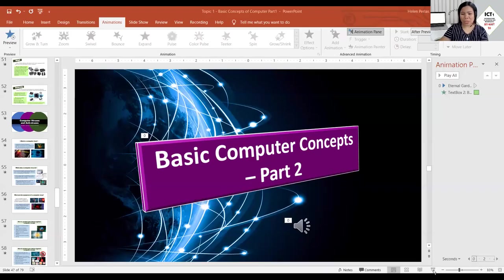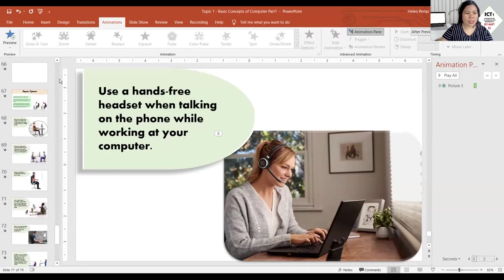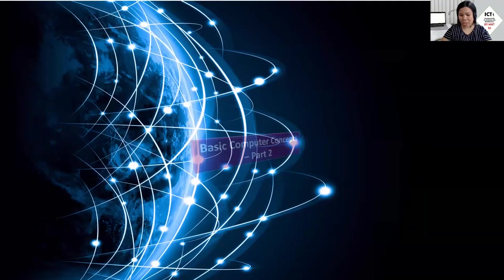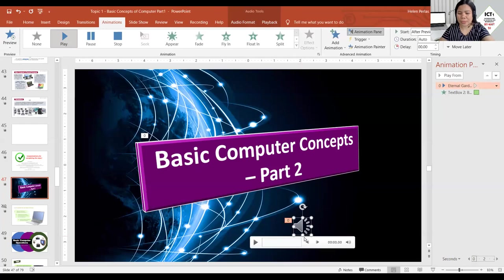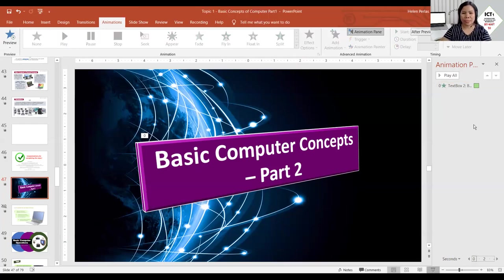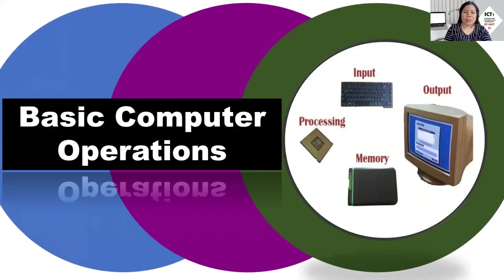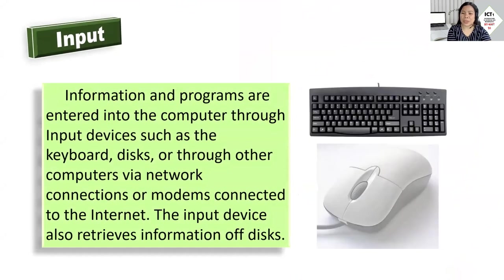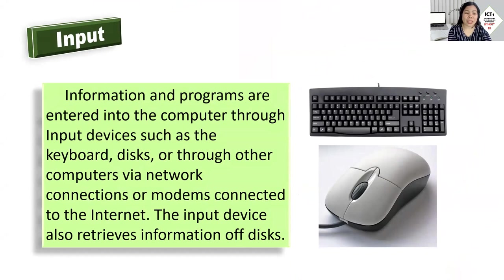Let me share the presentation which will help me share the content of this topic. So we have the basic concepts of computer, Part 2. We have the basic computer operations. In our previous lesson, I had already mentioned that the computer has four parts or classifications: input, output, storage, and processing or the processor. I will mention them again because they are the basic operations of a computer.